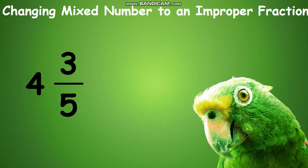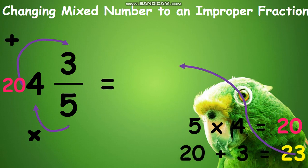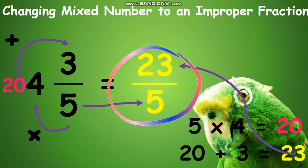And now, let's have the vice versa, changing a mixed number 4 and 3 fifths to an improper fraction. What you have to do is multiply the denominator 5 to the whole number 4, gives a product of 20. Then add the numerator to 20, which has a sum of 23, and which will be your numerator. Copy the same denominator as 5. Therefore, changing 4 and 3 fifths to an improper fraction gives you an answer of 23 fifths.